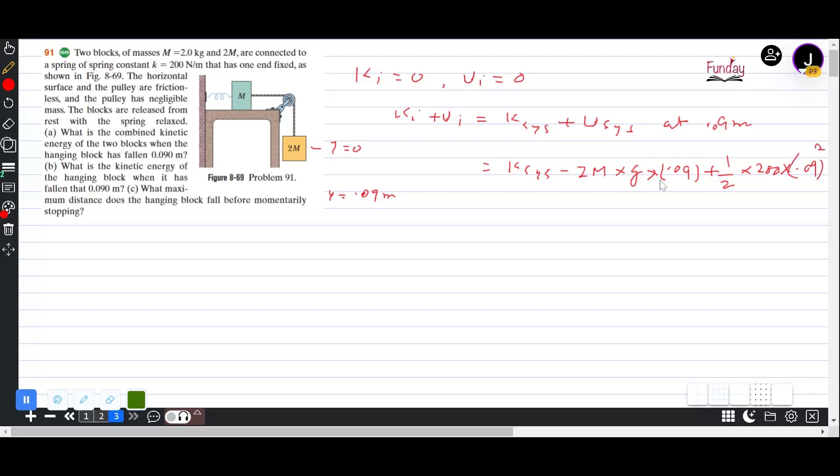So from here we get to know that K system is equal to, after doing the calculation, we arrive at K system is 2.8 joules by putting values of M and g. Now the second scenario is that is a combined kinetic energy.